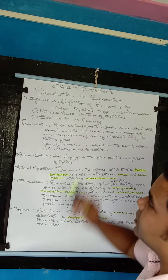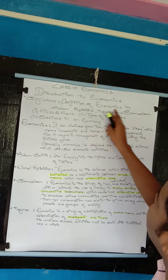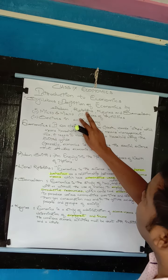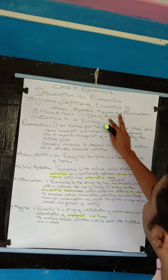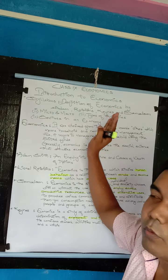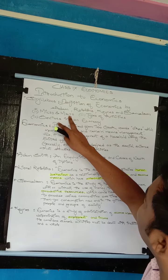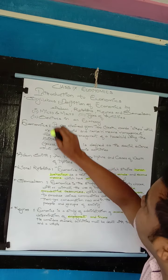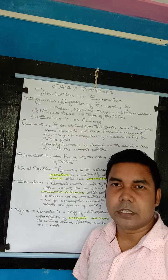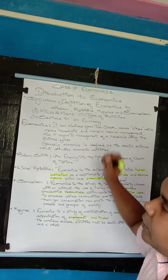Introduction to economics. As I told you the syllabus: definition of economics — Adam Smith, Leonard Robbins, Keynes, and Paul Samuelson. These four famous economists' definitions we will be learning. Then micro and macroeconomics by Professor Keynes, types of activities — economic and non-economic activities — and sectors of the Indian economy.